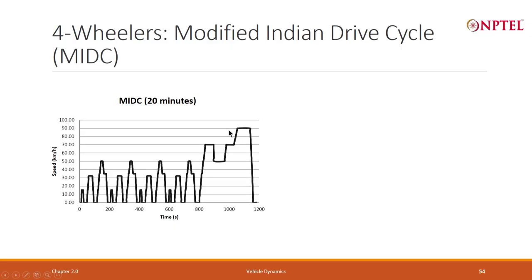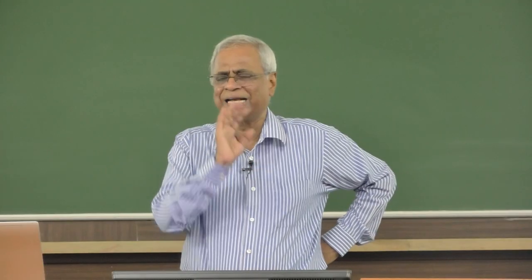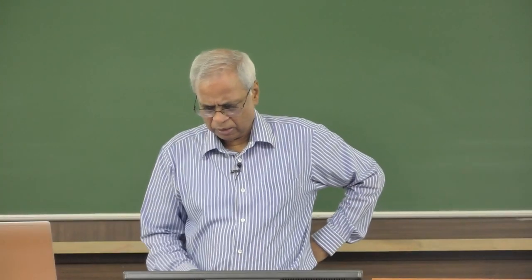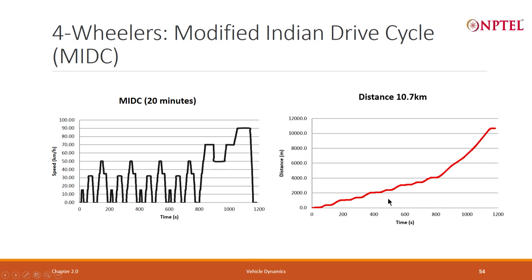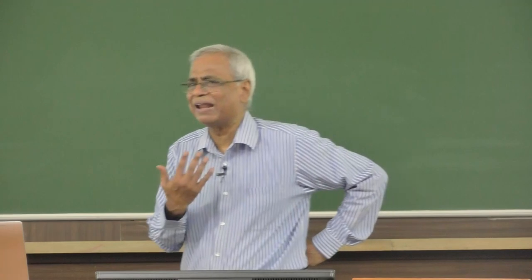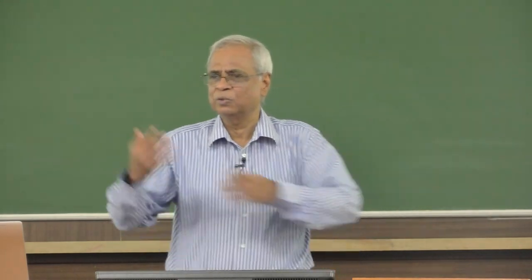Highway driving would largely be between 40 and 80–90 kilometers per hour — that would be a different kind of drive cycle. But this drive cycle is standardized. It was actually standardized for a petrol vehicle, but we are using the same thing for an electric vehicle. We can calculate the incremental distance traveled. The drive cycle gives you velocity versus time, and from there you compute the acceleration. Integration of incremental distance comes to 10.7 kilometers.